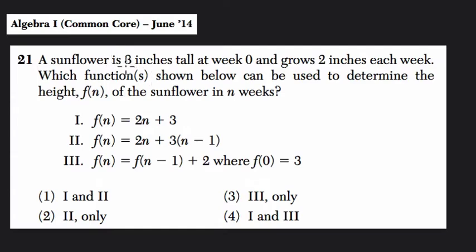Let's start by reading the context of the problem. A sunflower is 3 inches tall at week 0. So week 0 is a way of saying it's 3 inches tall at the start. This plant has already grown a little bit, and then it grows perfectly 2 inches each week after that. It's going about 2 inches per week, but here we're assuming it's exactly 2 inches a week.